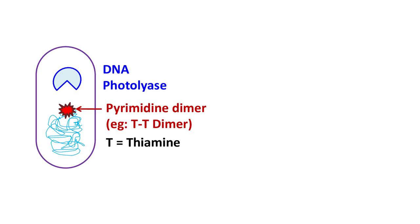The removal of pyrimidine dimers is done by the enzyme DNA photolyase. This enzyme is a product of the PHR gene.